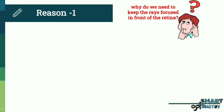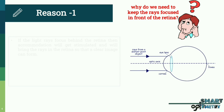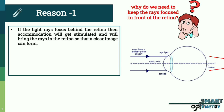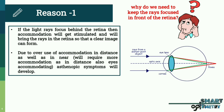Reason number one: if the light rays focus behind the retina, then accommodation will get stimulated and will bring the rays onto the retina so that a clear image can form. Due to overuse of accommodation in distance as well as in near, asthenopic symptoms will develop.